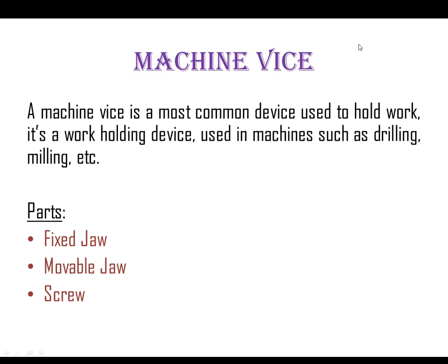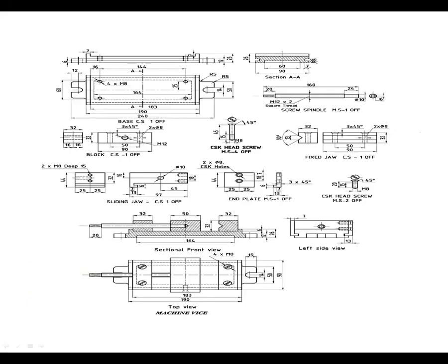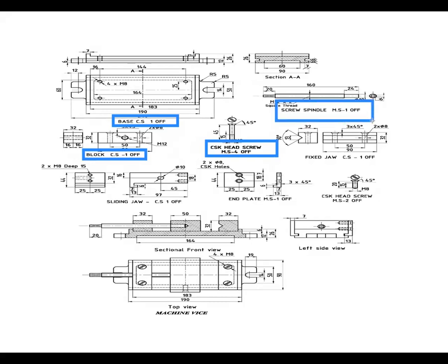There are different parts of a machine vise: fixed jaw, movable jaw, screw, and lifter. The detailed components include a base block, head screw, screw spindle which is made of mild steel, the spindle jaw, end plate, and head screw.